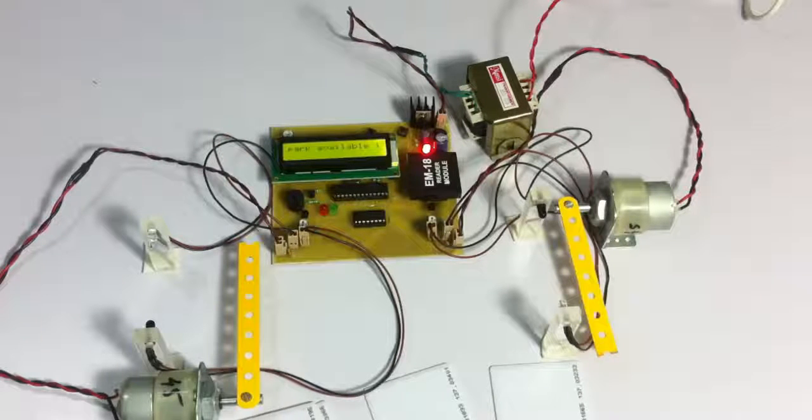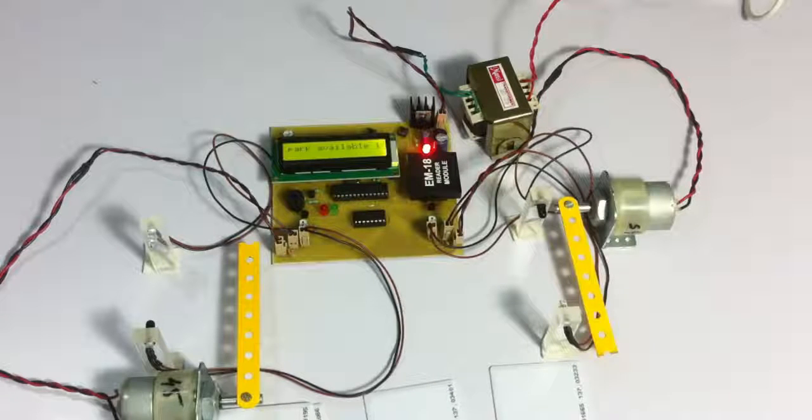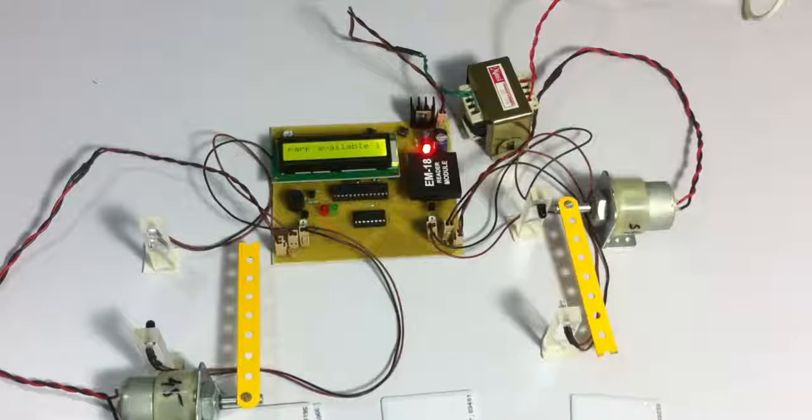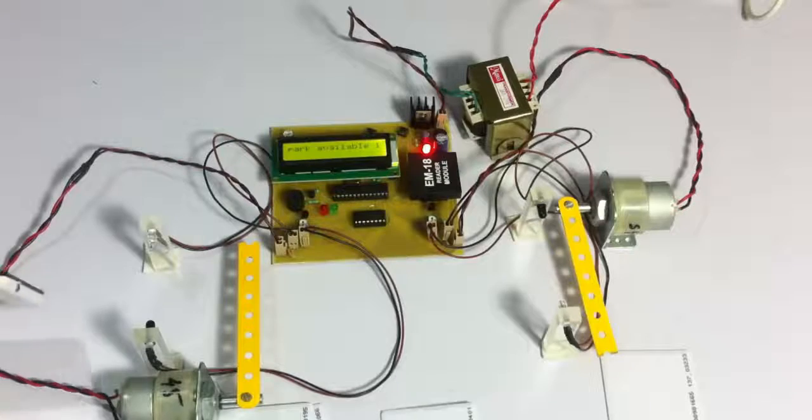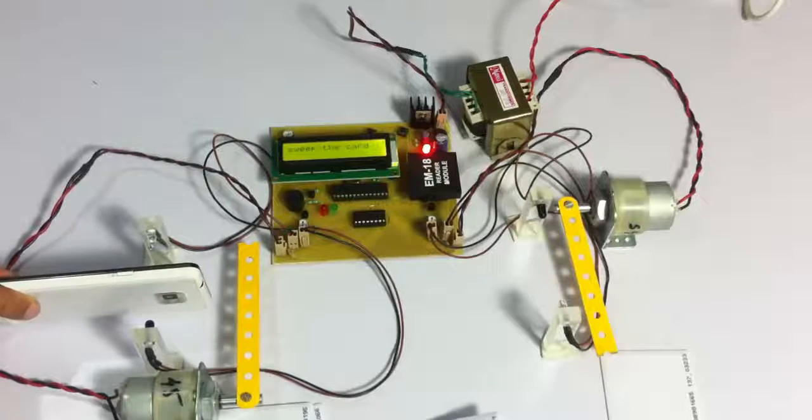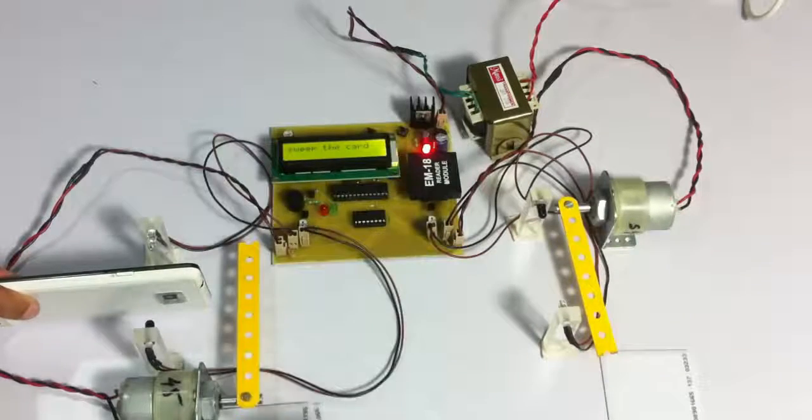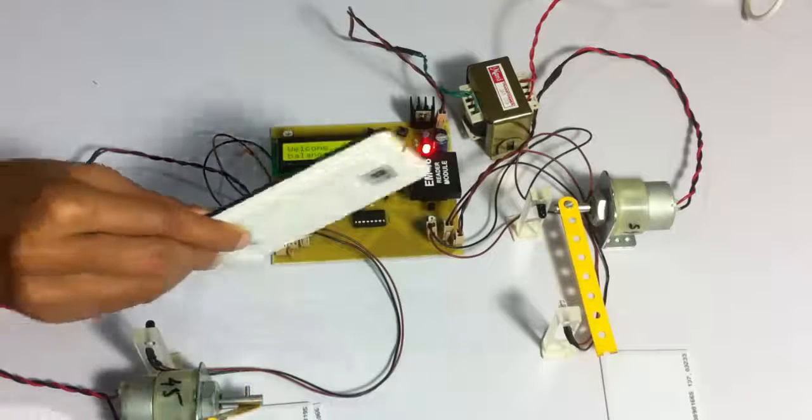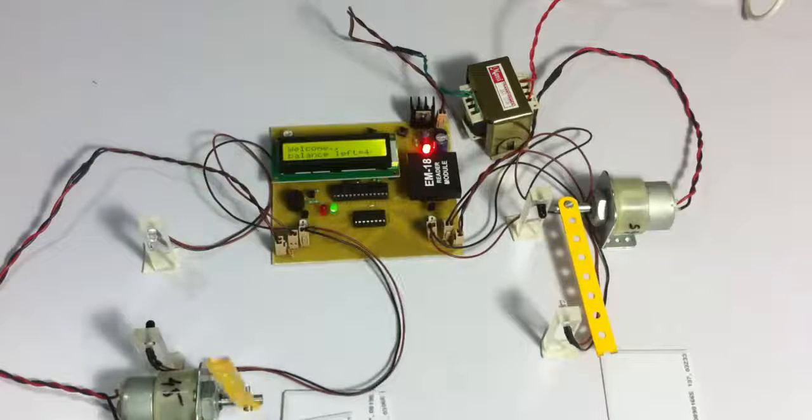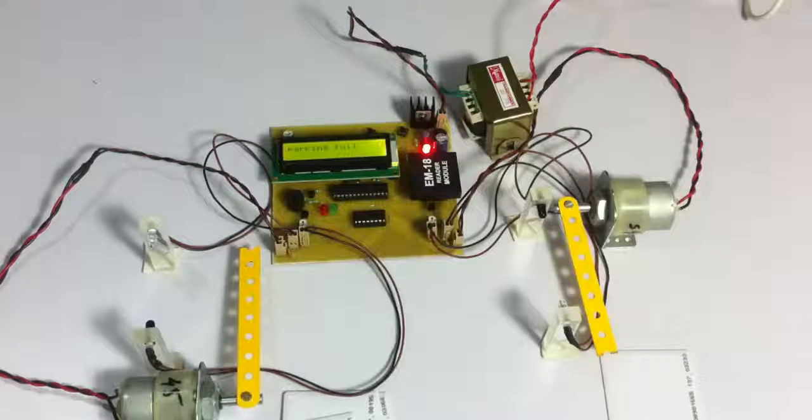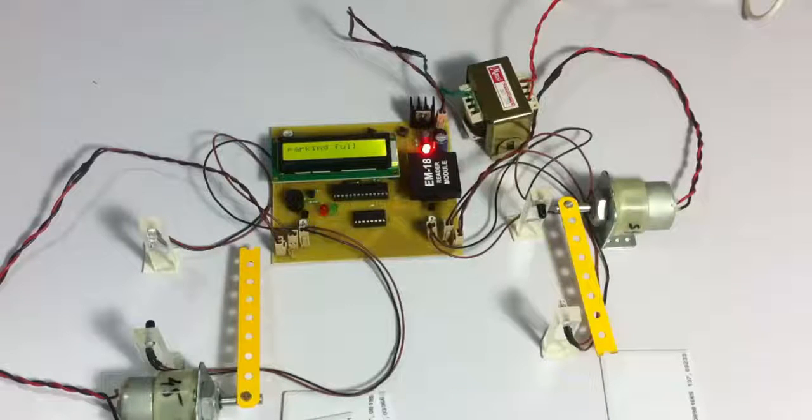Now similarly, let's swipe another card for simulating another vehicle. As you can see, it's now showing that parking available is 1, only 1 slot is available. And it also shows the current balance of each one.